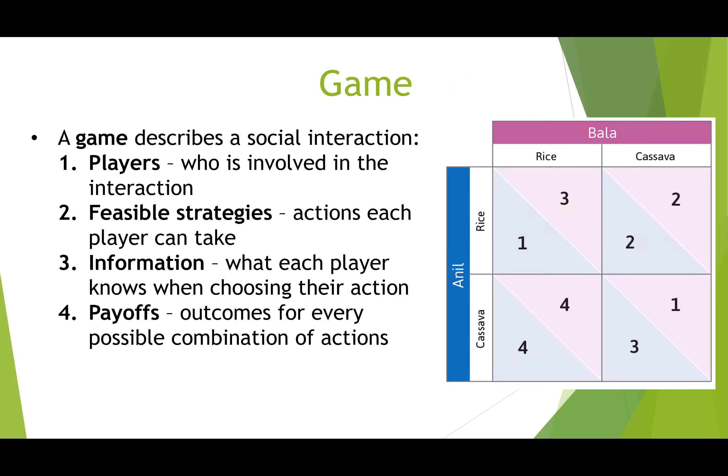It's best to introduce game theory concepts through a worked example. We have two players: Anil and Bala, two farmers. The feasible strategies — actions each player can take — are to grow either rice or cassava. Regarding information: we assume Anil and Bala don't actually know what the other is going to choose, which is a critical assumption. You might produce something without knowing what your competitors will do.